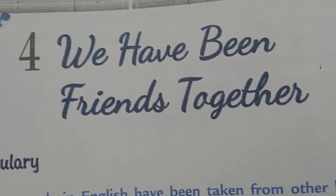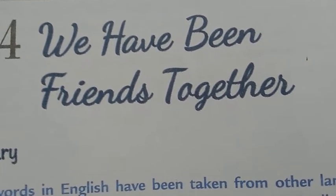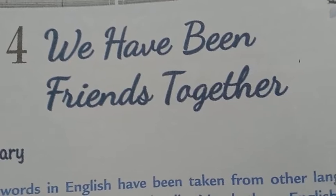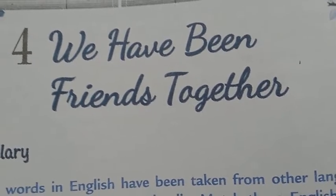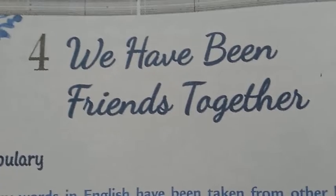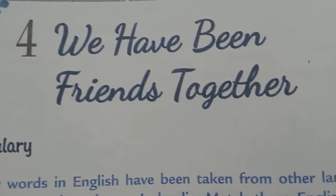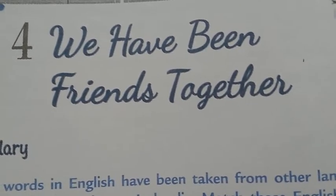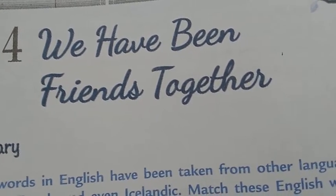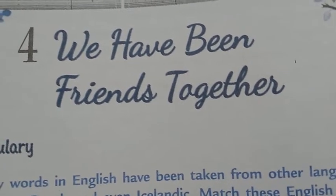Today we will learn chapter 4, 'We Have Been Friends Together.' It is from your workbook, Windchime 6. We already read and learned the poem named 'We Have Been Friends Together' by Caroline Norton from the textbook Windchime. Here in the workbook, we will learn the vocabulary and grammar parts.